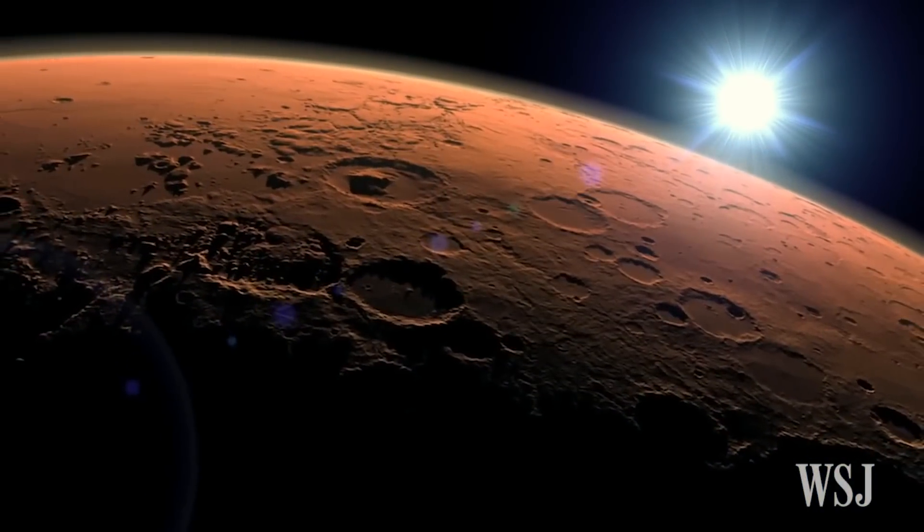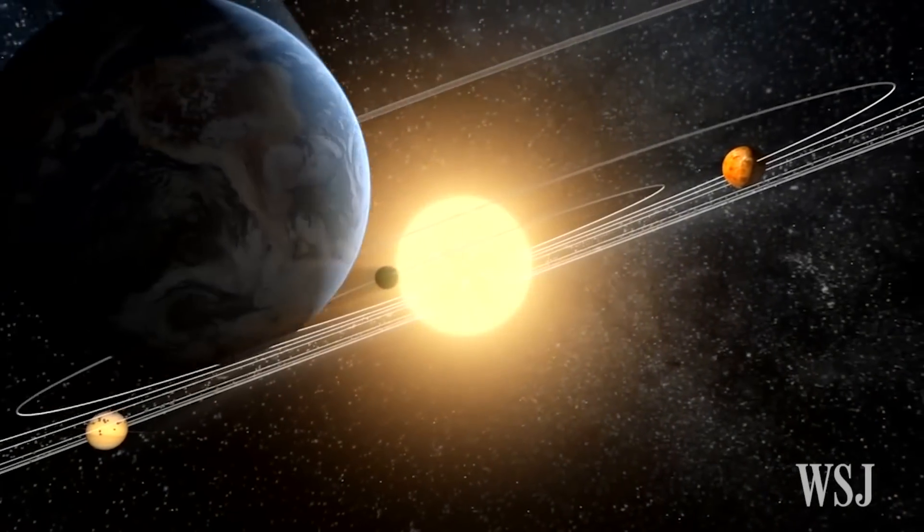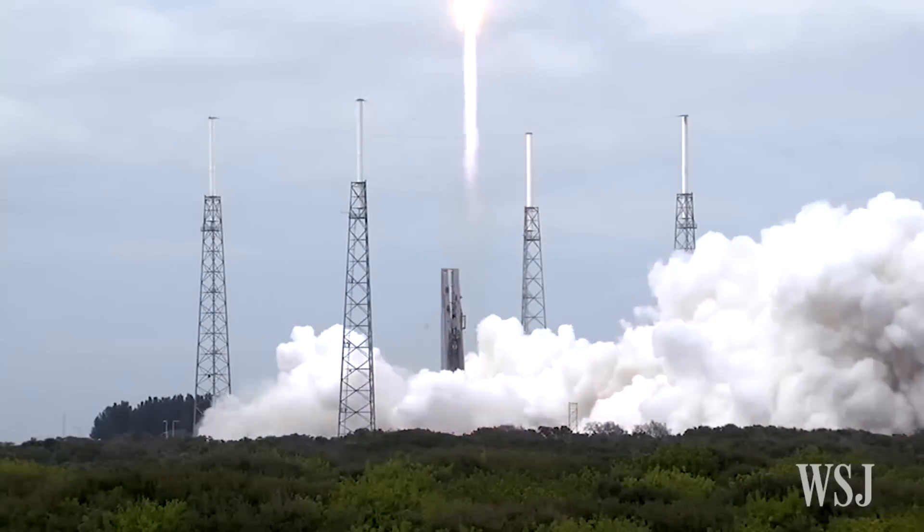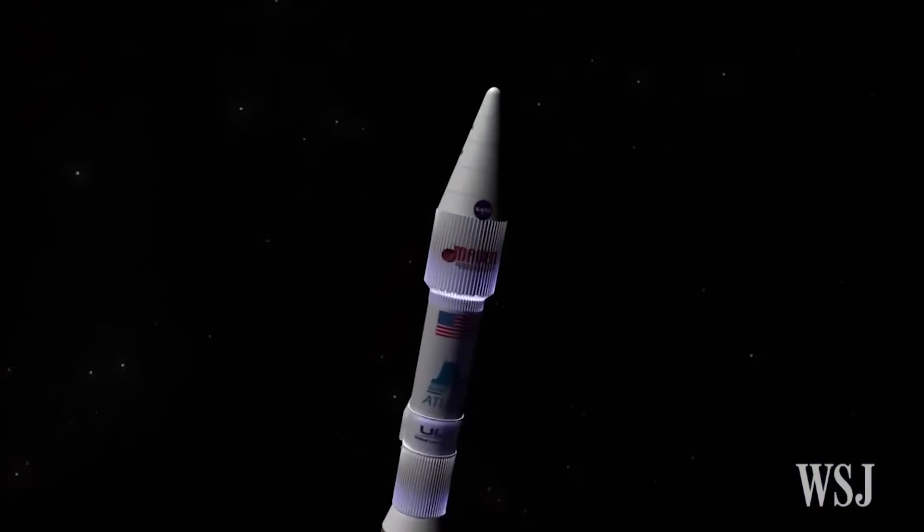One of the biggest challenges of visiting Mars is the time it takes to get there. Traveling the shortest possible distance, when Earth and Mars are ideally aligned, it takes a spacecraft with current technology about five months to reach the red planet, according to NASA.